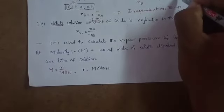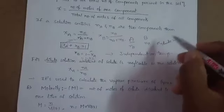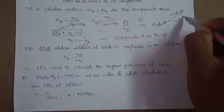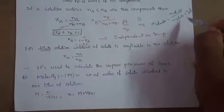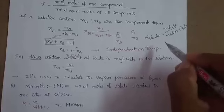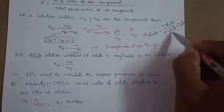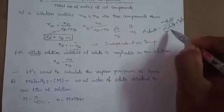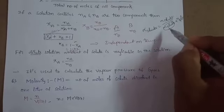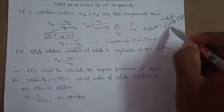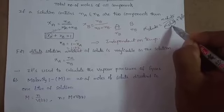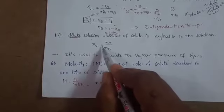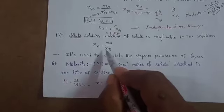The mole fraction of solute equals the number of moles of solute divided by the number of moles of solute plus the number of moles of solvent. But for dilute solutions, the number of moles of solute in the denominator is negligible compared to the solvent, so we can write the mole fraction of component A as nA divided by nB.